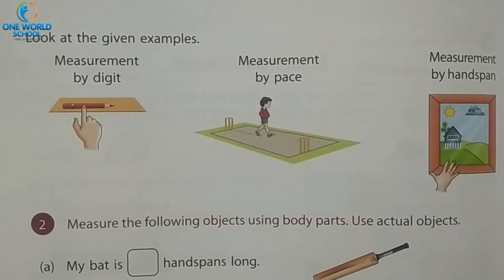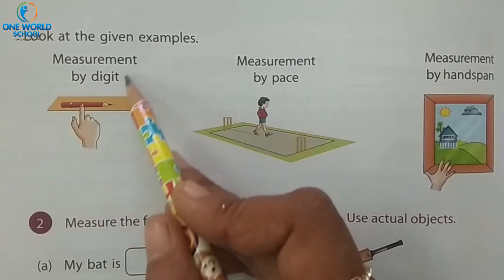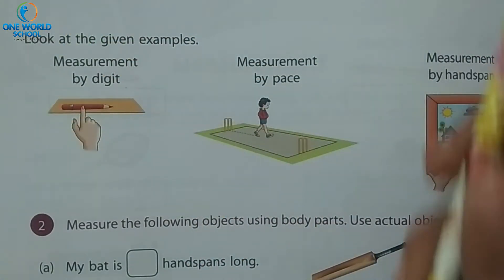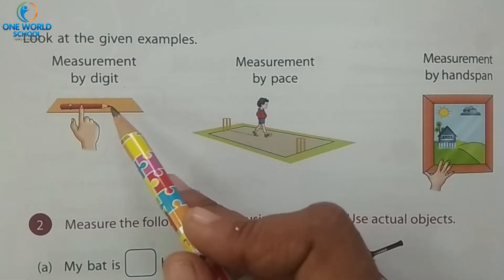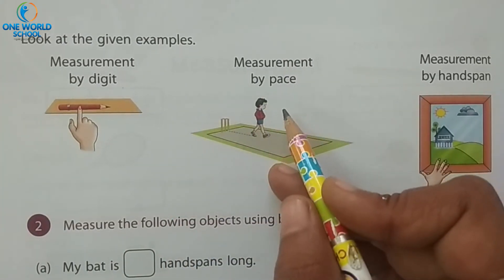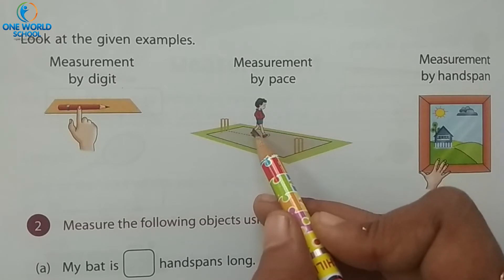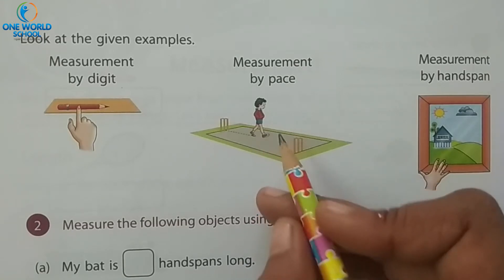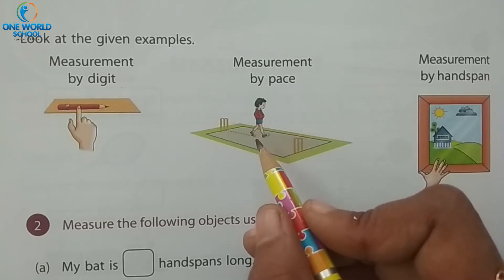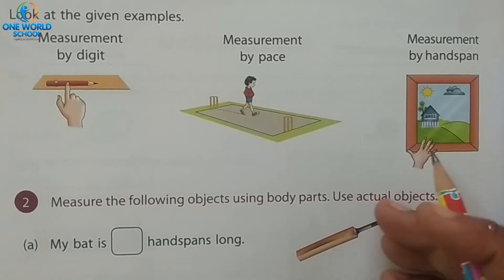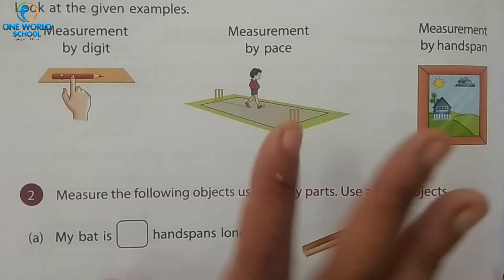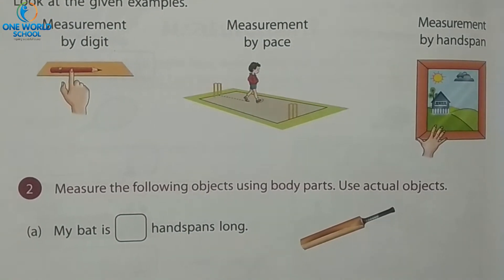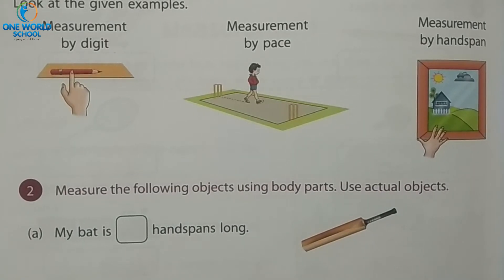Turn the page. Look at this example — measurement by digit: there are two pencils here, so we can count them, one and two. That is measurement by digit. Then measurement by pace: if a boy is walking, we can count the steps — that is measurement by pace. Then measurement by hand span: we can measure any frame using our hand. It is measurement by hand span.